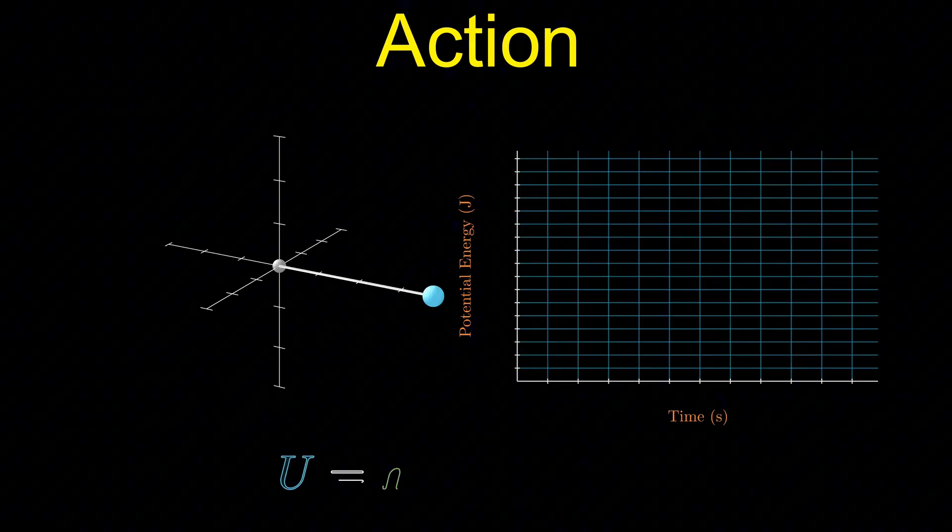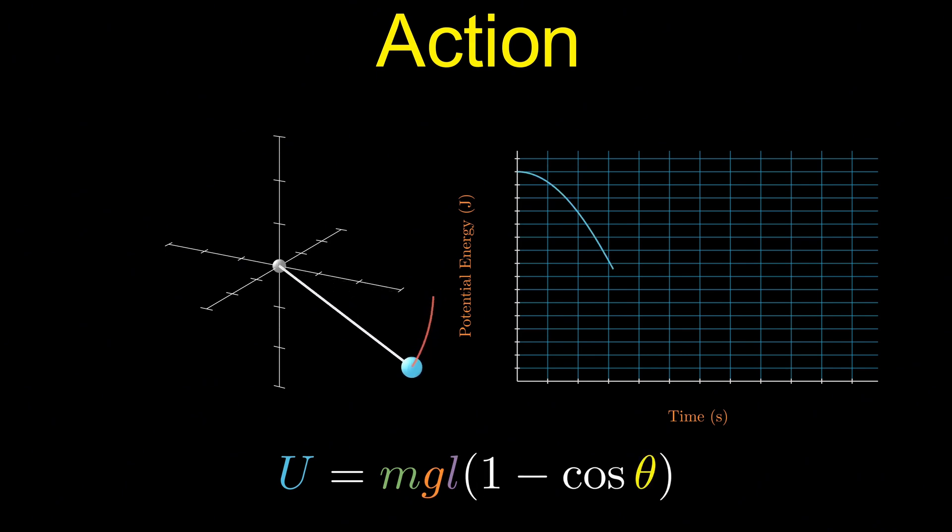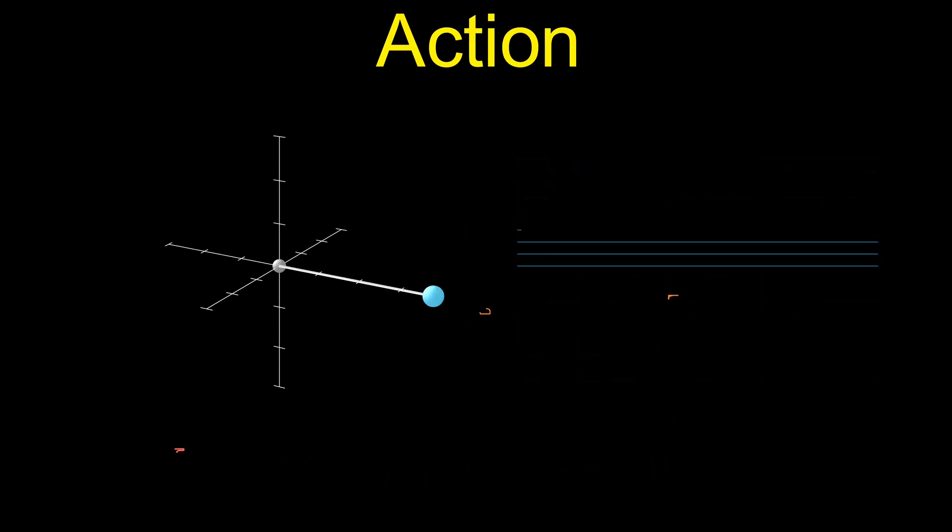The potential energy comes from gravity. It's zero at the lowest point and increases as the pendulum rises. So, the Lagrangian of the pendulum is the kinetic energy minus the potential energy.